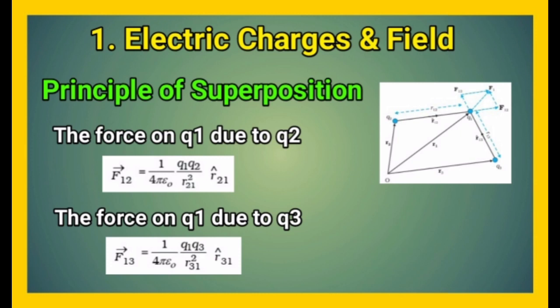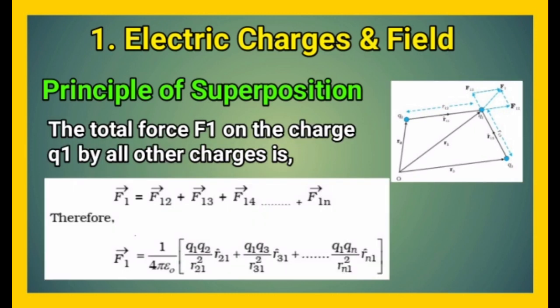the force on charge Q1 due to charge Q3 is given by F13 equals 1 upon 4 pi epsilon naught Q1 Q3 upon R31 square into R31 cap. So,